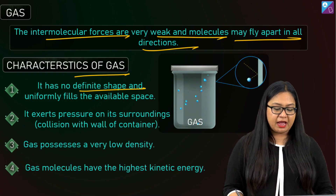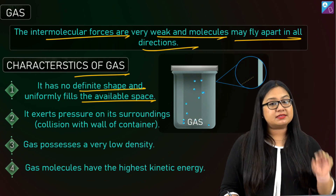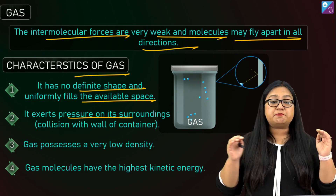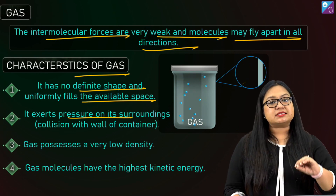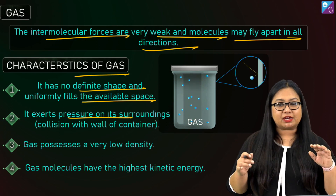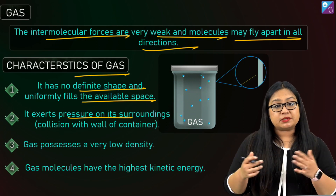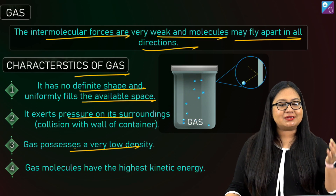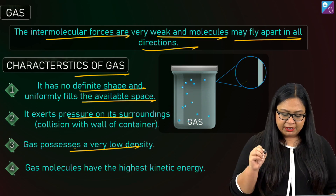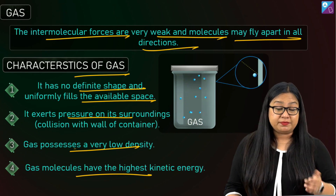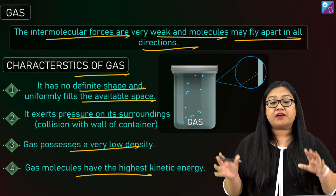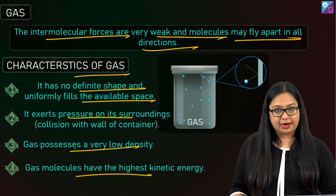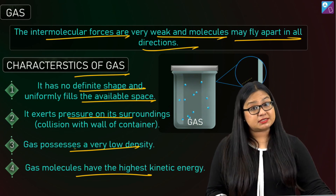Gases have no definite shape and uniformly fill the available space. They exert pressure on their surroundings because gas molecules keep moving randomly in Brownian motion — they collide with the walls and with each other, and because of that, pressure comes. Gas possesses a very low density compared with solids and liquids. Gas molecules have the highest kinetic energy at any given temperature, which is why their speed is highest.